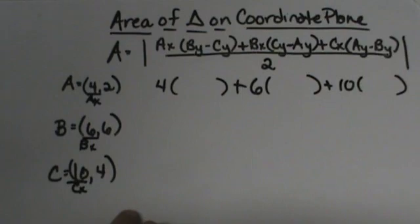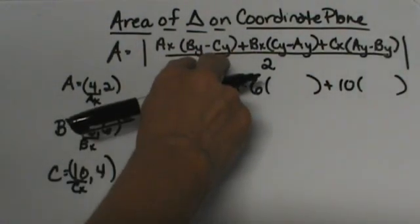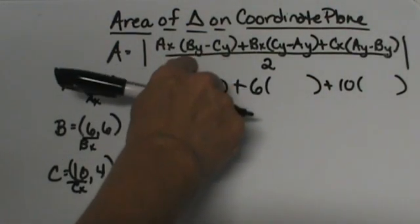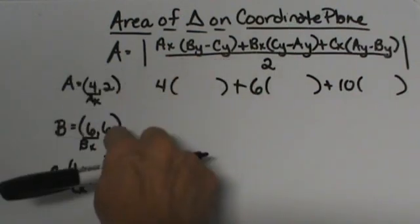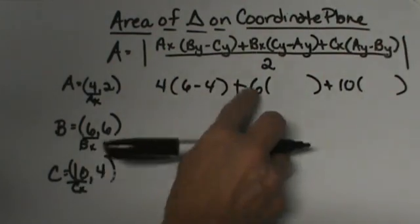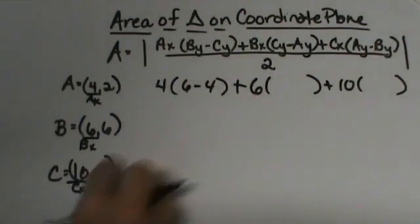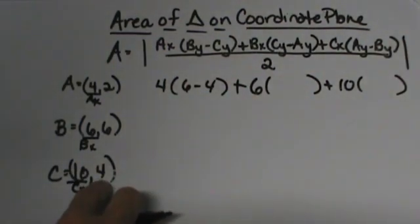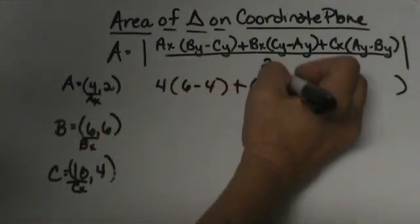Now let's go back and get the difference in the y coordinates. I'm going to take my y coordinates of B and C and subtract those. So I'm going to take 6 minus 4. Then for this one I'm going to subtract the C point's y coordinates minus the A. So I'm going to subtract 4 minus 2.